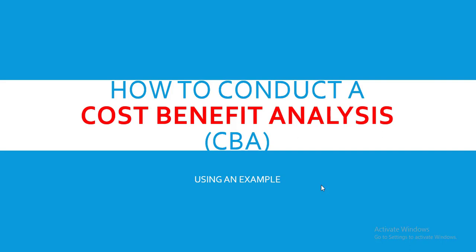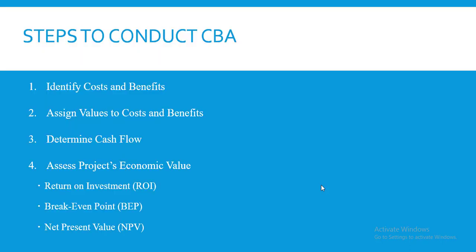To understand this concept better, we are going to illustrate this process using an example of an inventory system. But before we get to that, it's important to understand the steps undertaken before we begin the calculations. When conducting a cost-benefit analysis, you need to follow four steps. Step one: identify the costs and identify the benefits.